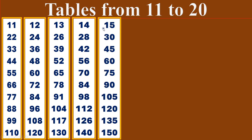15 times table. 15 ones are 15. 15 twos are 30. 15 threes are 45. 15 fours are 60. 15 fives are 75.